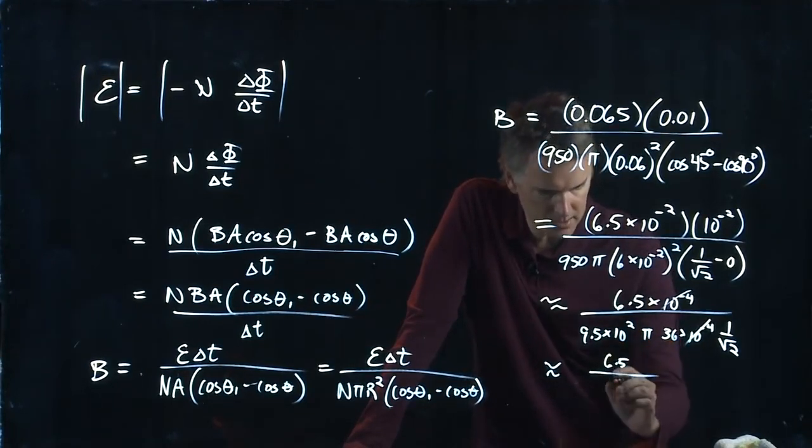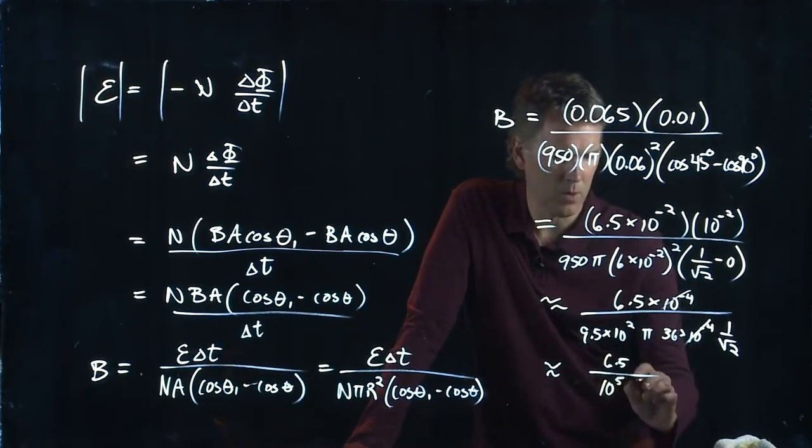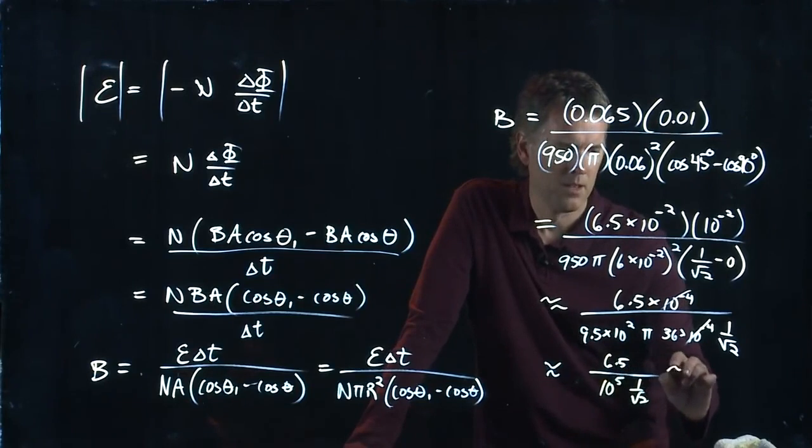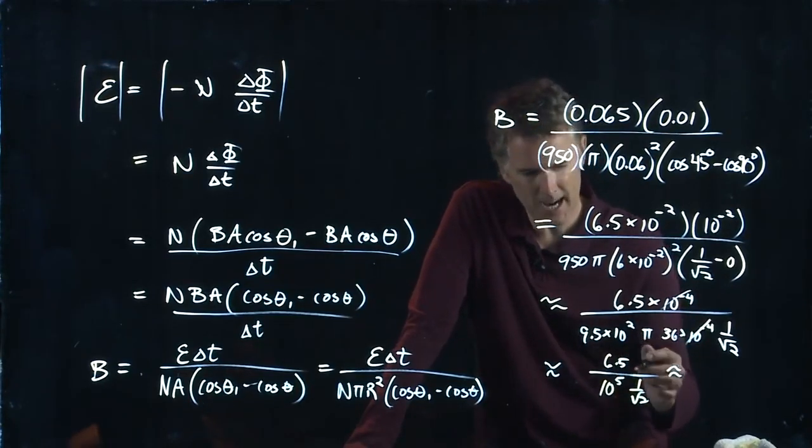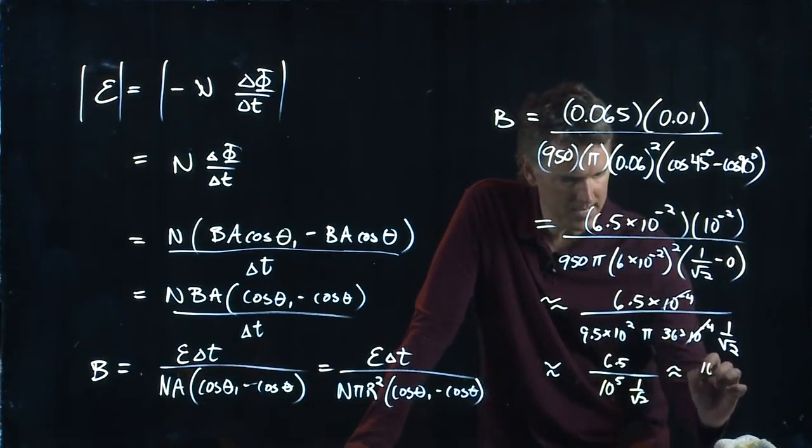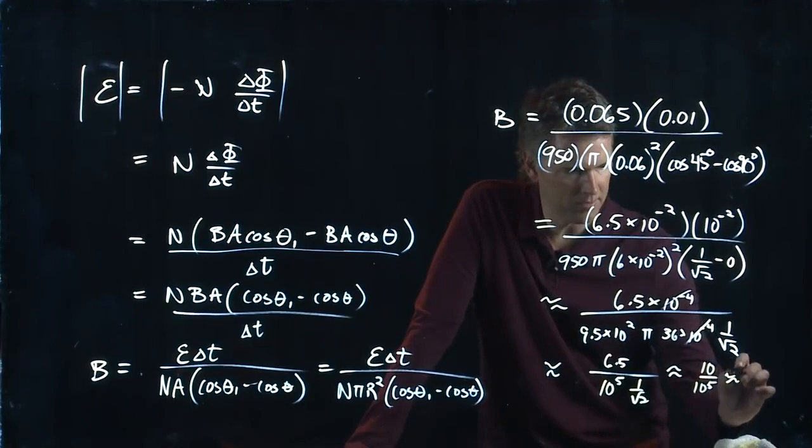And then we got a 1 over root 2, and that's the same as multiplying by square root of 2 up at the top, which has to be really close to 10 up in the top. So I'm going to say my guess is 10 to the minus 4.